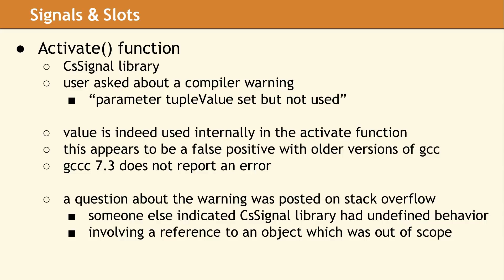In our Signals and Slots presentation, a question came up about a compiler warning that a user received in the Activate function. In an older version of GCC, the user saw a warning about a parameter being set but not used. This is a false positive, since the parameter really is used in the function. In order to better understand the warning, he posted a question on Stack Overflow. As part of that discussion, another person stated our code had undefined behavior involving a reference to a destroyed object. Let's take a moment to examine the code in a bit more detail and figure out if this really is undefined behavior.